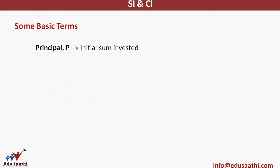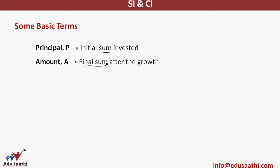Let's look at some basic terms important to understanding simple interest and compound interest. The first is principal — the initial sum that is invested or the initial money you start your investment with. Amount is the final money you get after growth. So initial value is principal and final value is amount. Rate of interest is the growth happening over the principal to give you your final amount, expressed in percentage terms.